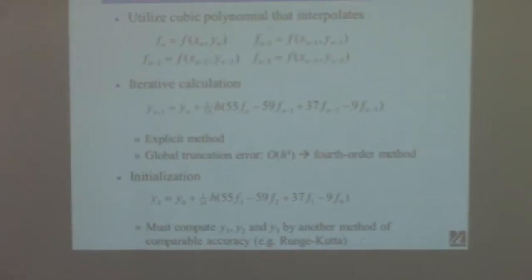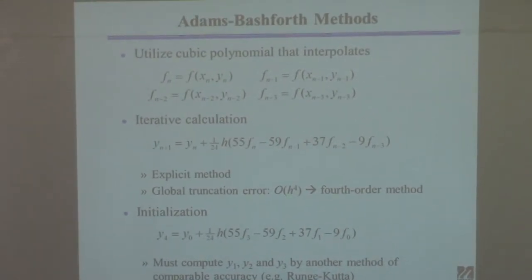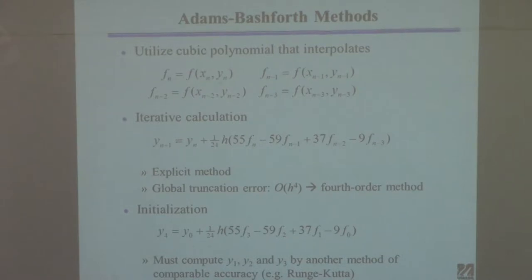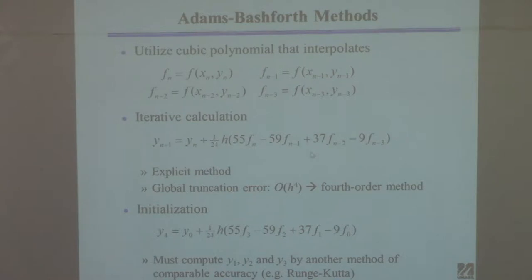For example, there's something called the Adams-Bashforth method. The Adams-Bashforth method is based on constructing a polynomial that interpolates these points — specifically, it's a polynomial going through the points (x_n, y_n), (x_{n-1}, y_{n-1}), also n-2 and n-3. So these are the four previous solutions. You fit a cubic through those four points, integrate it, evaluate the limits, and once you're done you get a specific formula.